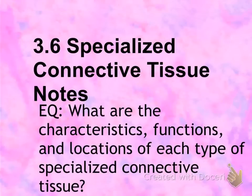This is 3.6 Specialized Connective Tissue Notes. The essential question is: what are the characteristics, functions, and locations of each type of specialized connective tissue?